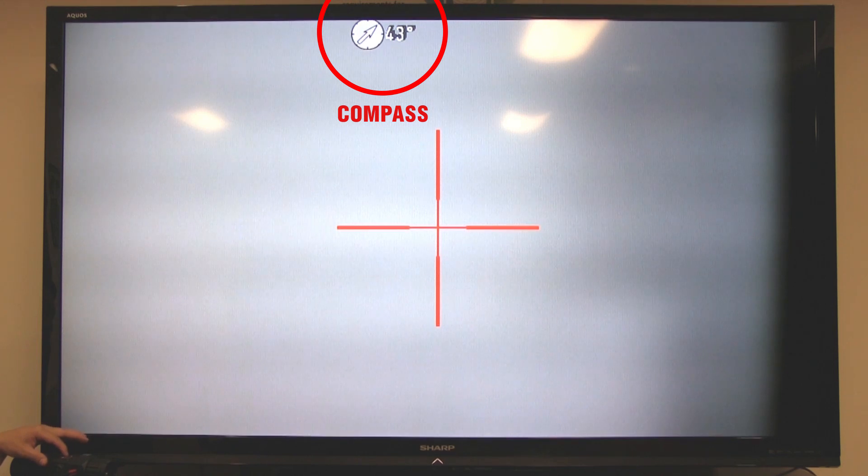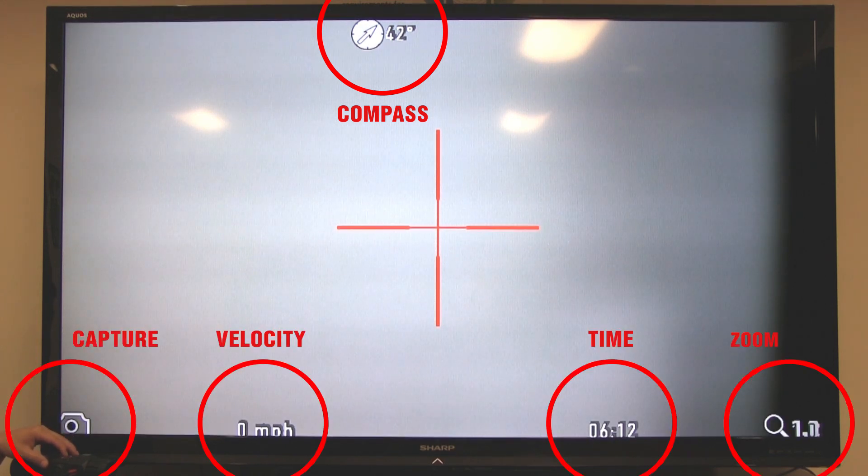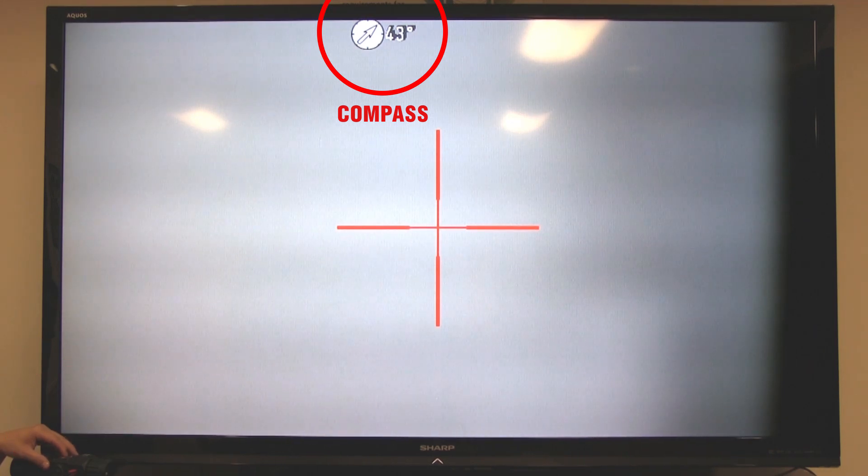If you press the enter button one time you'll bring up the bottom row of icons showing your velocity, your ground speed, your time and your magnification.